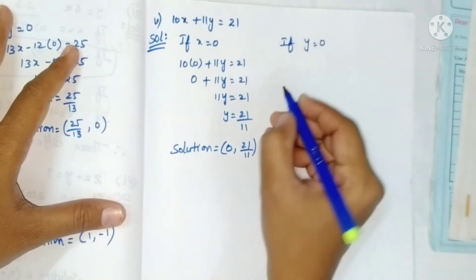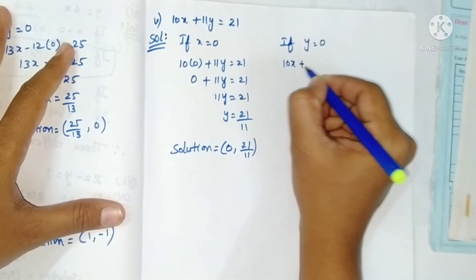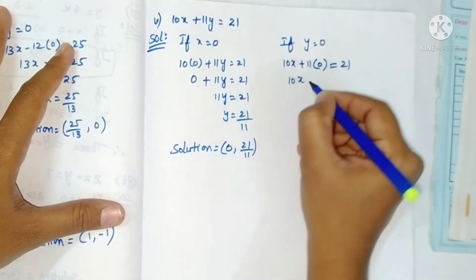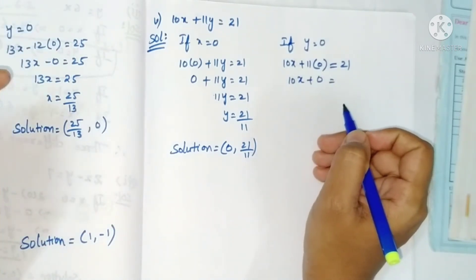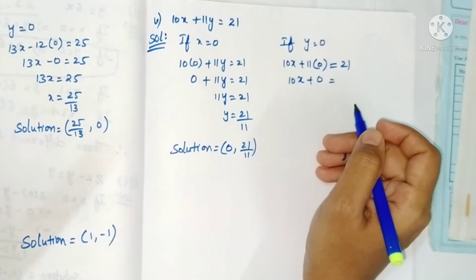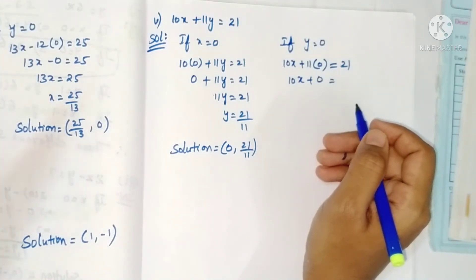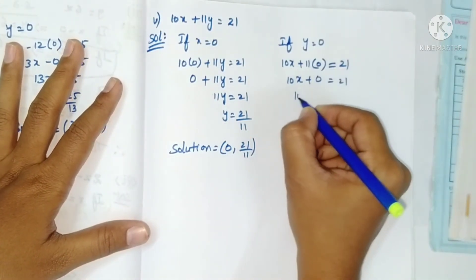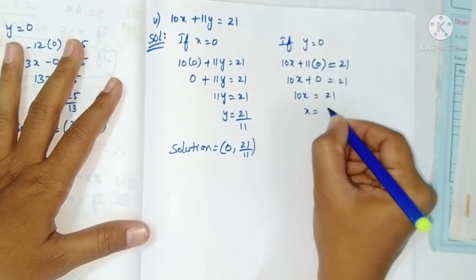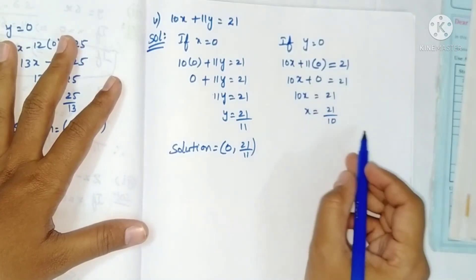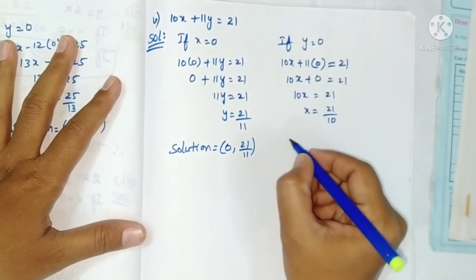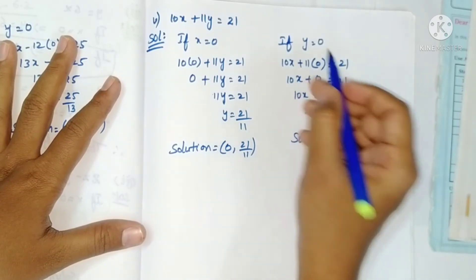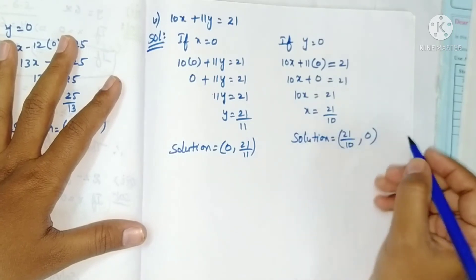Take y = 0: 10x plus 11 into 0 equals 21. Remember, 0 is the hero in multiplication - any number multiplied by 0 is 0. So 10x equals 21, x equals 21 by 10. There are no common factors for 21 and 10, so solution is (21/10, 0).